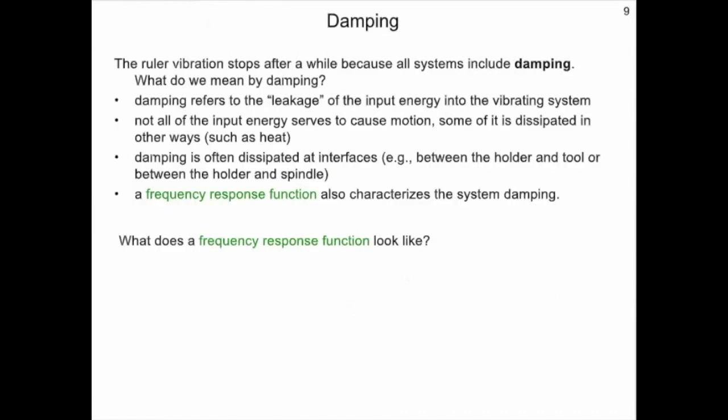We know that after some time, the ruler will stop vibrating. This is because all physical systems include some damping. Damping refers to the leakage of the input energy into the vibrating system. In other words, not all of the input energy serves to cause motion. Some of it is dissipated in other ways, particularly heat. Damping is often dissipated at interfaces, for example, between the holder and tool or between the holder and spindle. A frequency response function also characterizes the system damping.